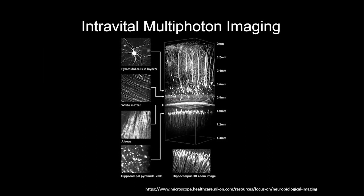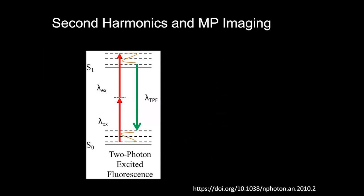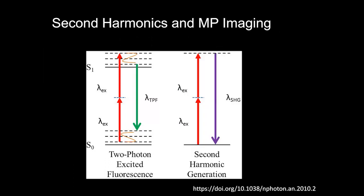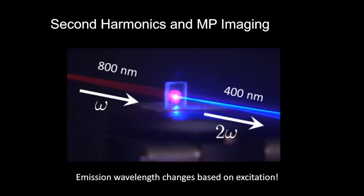Another powerful feature of multi-photon microscopy is second harmonic generation (SHG). With two-photon excitation, two photons excite the molecule with no heat loss, and emission occurs at exactly half the excitation wavelength — so if you excite at 800 nm it comes out at 400 nm, and at 1000 nm excitation it comes out at 500 nm. On the microscope, we check for SHG by tuning the laser and watching if the signal shifts from the blue channel to the green channel.